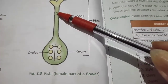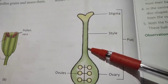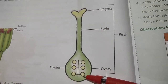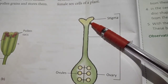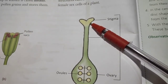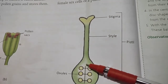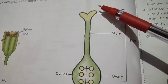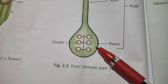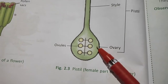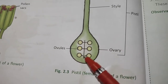Then gynoecium — this is the pistil or carpel. It has three parts: stigma, style, and ovary. Stigma is very sticky so that pollen grains can stick to it. Style is the middle part of a pistil and is a tube which connects the stigma to the ovary. The ovary contains tiny egg-like structures called ovules.